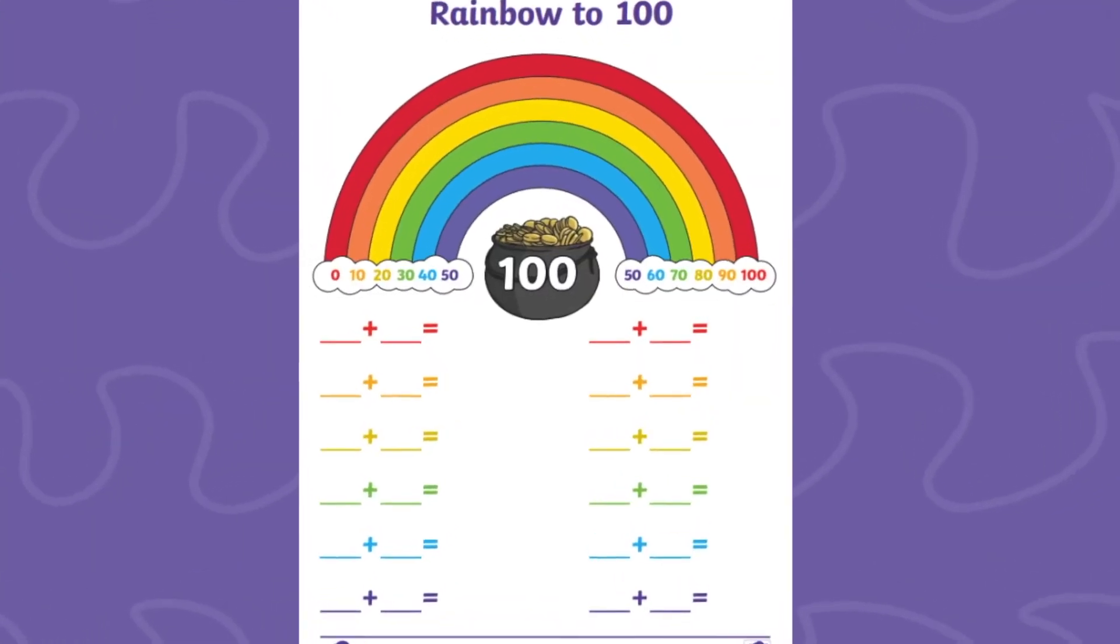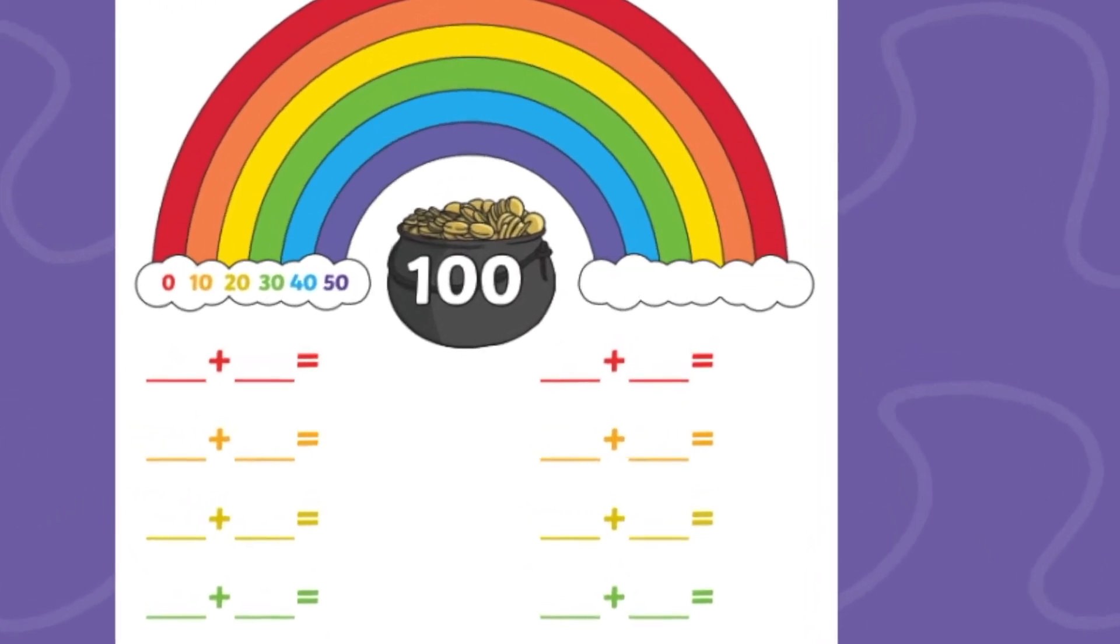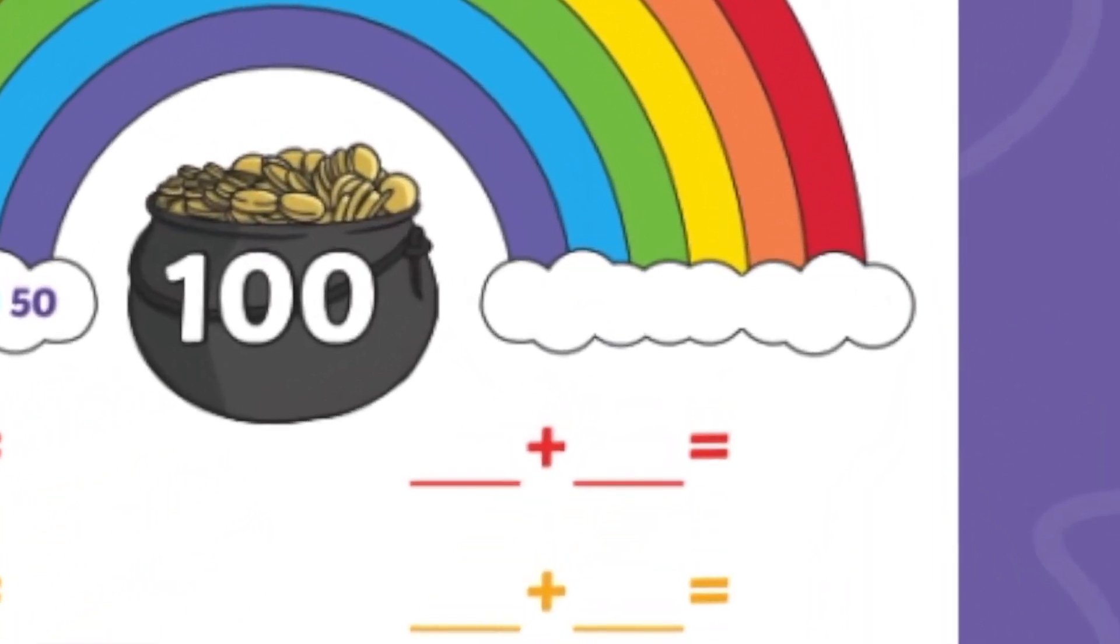Alternatively, you could cover some of the numbers in the rainbow and see if your children can fill in the missing gaps.